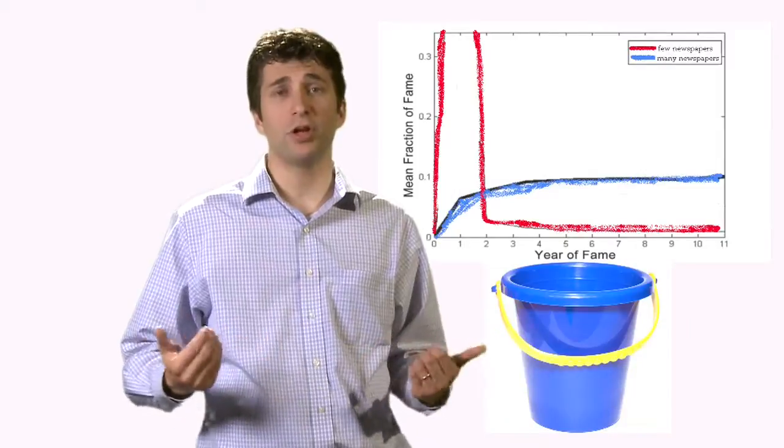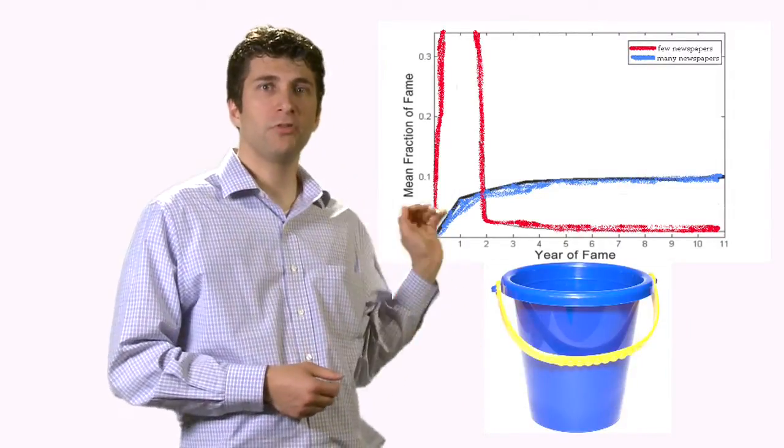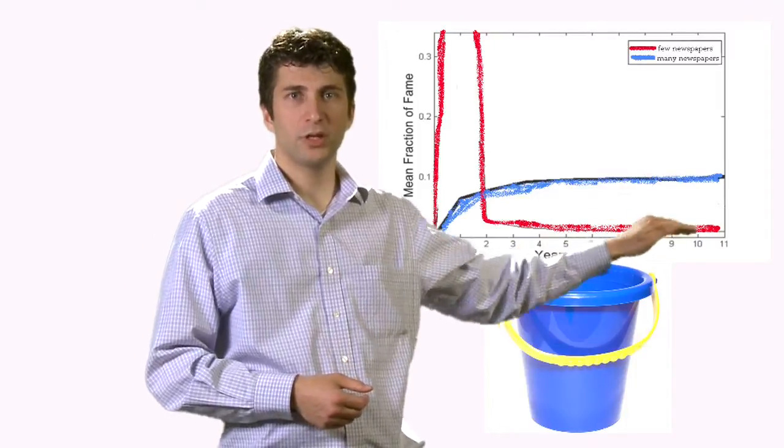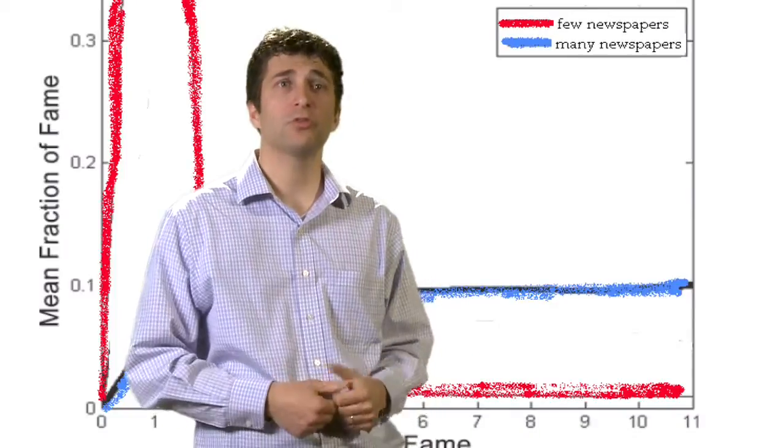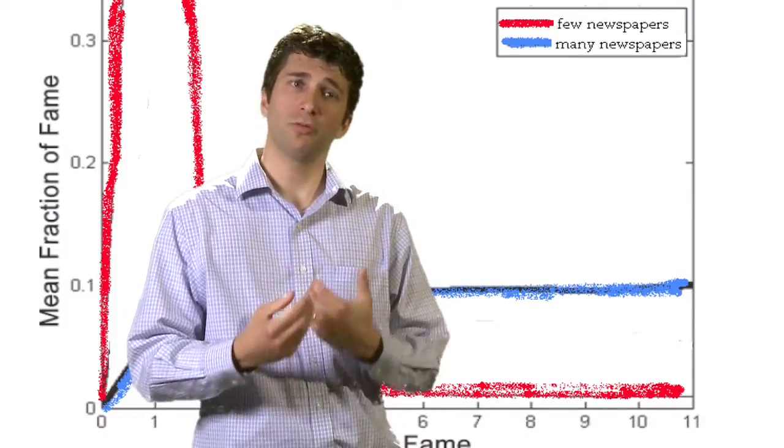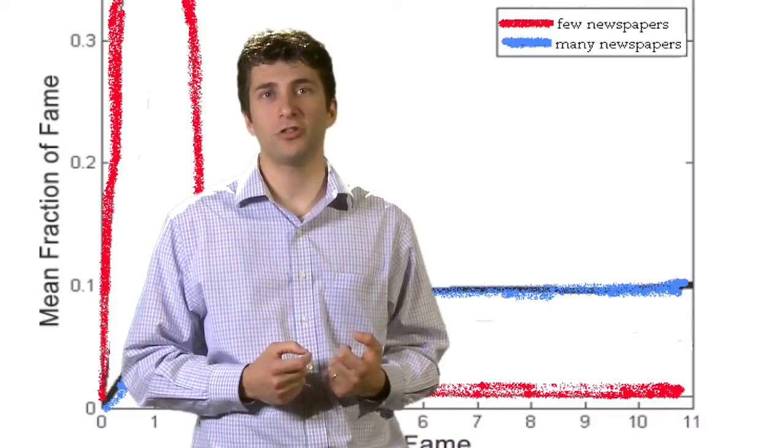But the people in the blue bucket, the individuals who follow this straight trajectory, those are the individuals who are famous. And so famous people tend to stay famous for many, many years. And so this big data analysis on fame changes the way that sociologists think about fame.